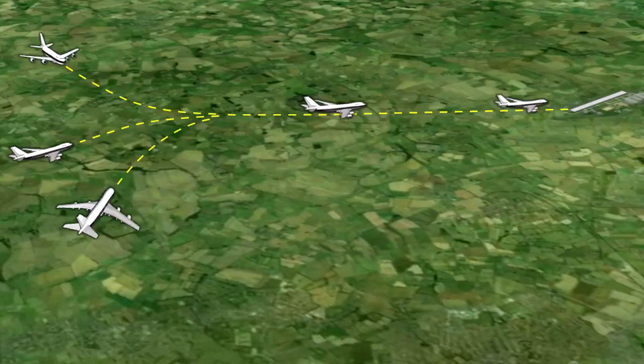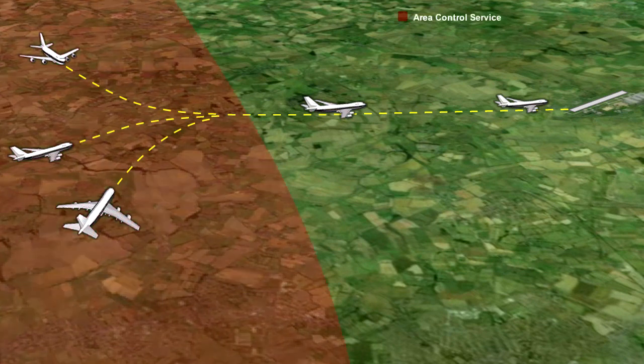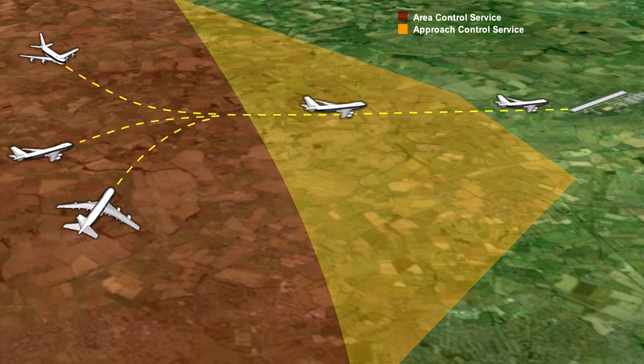There are three distinct parts to the air traffic control service that is provided to pilots. They are the area control service, the approach control service and the aerodrome control service.